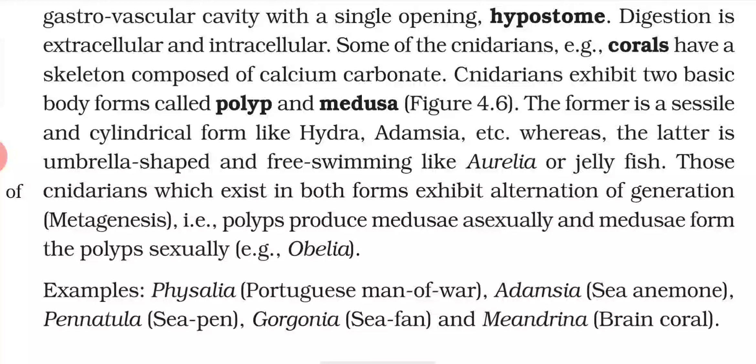Those cnidarians that exhibit both forms show alternation of generation called metagenesis. For example, in Obelia, the polyp produces medusa asexually and the medusa forms the polyp sexually. Examples of cnidarians include Physalia (Portuguese man-of-war), Adamsia (sea anemone), Pennatula (sea pen), Gorgonia (sea fan), and Meandrina (brain coral).